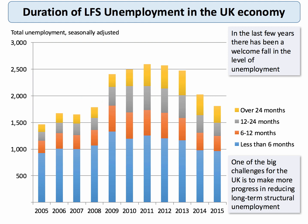Within the labour market, although unemployment is falling quite sharply, there's a lot of long-term unemployment. All the colours above the blue on this chart show people who have been out of work for at least six months. Although unemployment has fallen sharply in the last three years, there are still well over 600,000 to 700,000 people who have been out of work for at least six months, sometimes over two years. Supply-side policies in the labour market are needed to bring down structural unemployment.